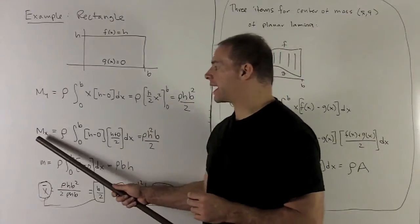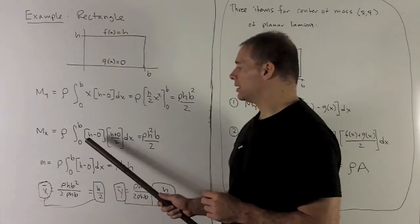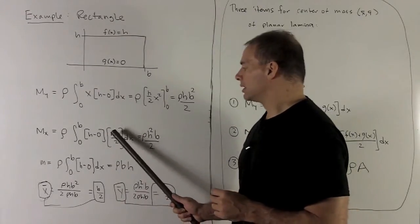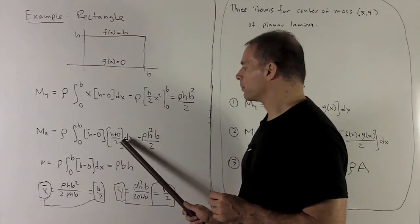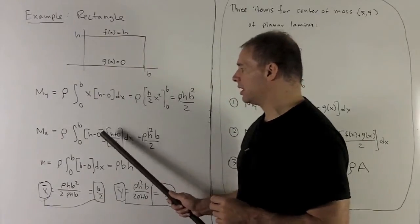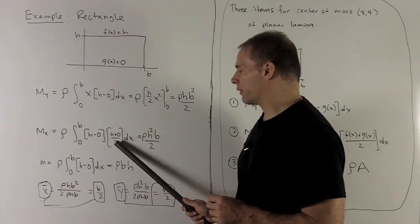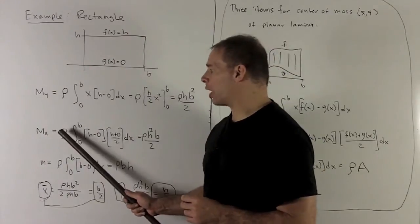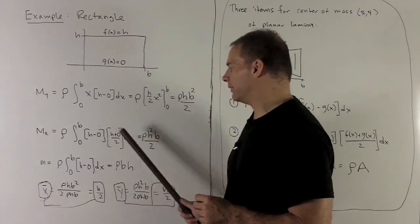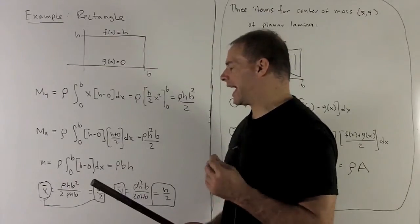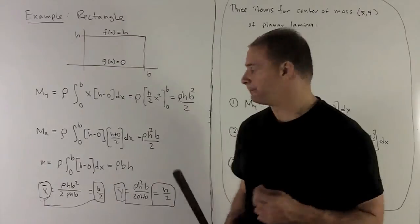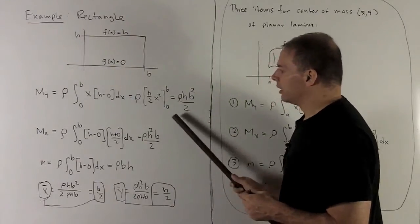For my moment about the x-axis, rho in front, definite integral from 0 to b. Top minus bottom, top plus bottom over 2, dx. Now note, everything in here is going to be constant. So I can pull out an h squared over 2, that's times rho. And then we're just left with definite integral from 0 to b of dx. Well that's just going to give me an x going from 0 to b. So we're just going to have a b.